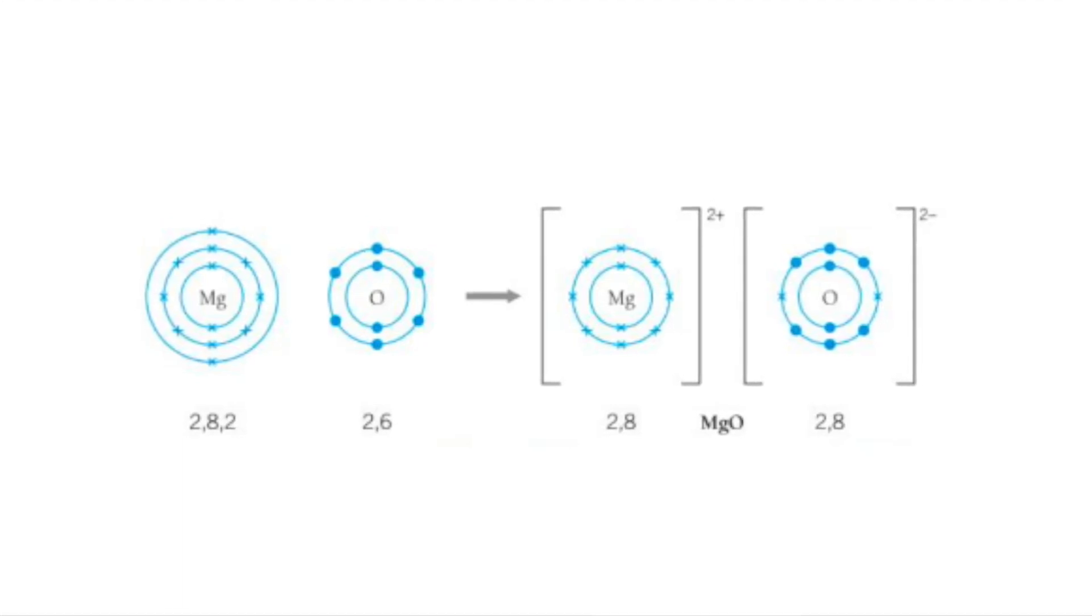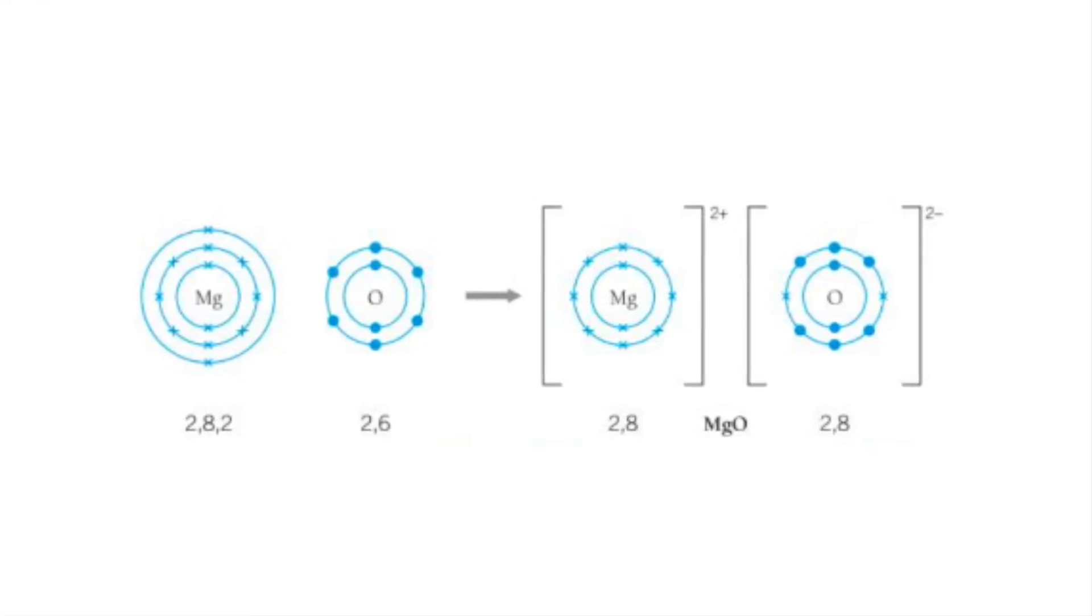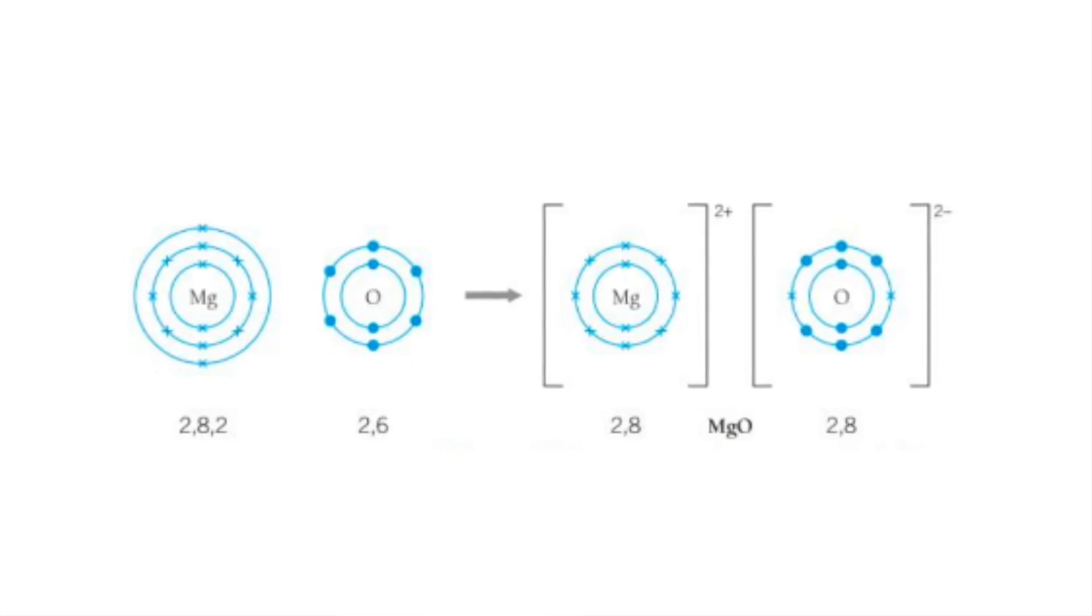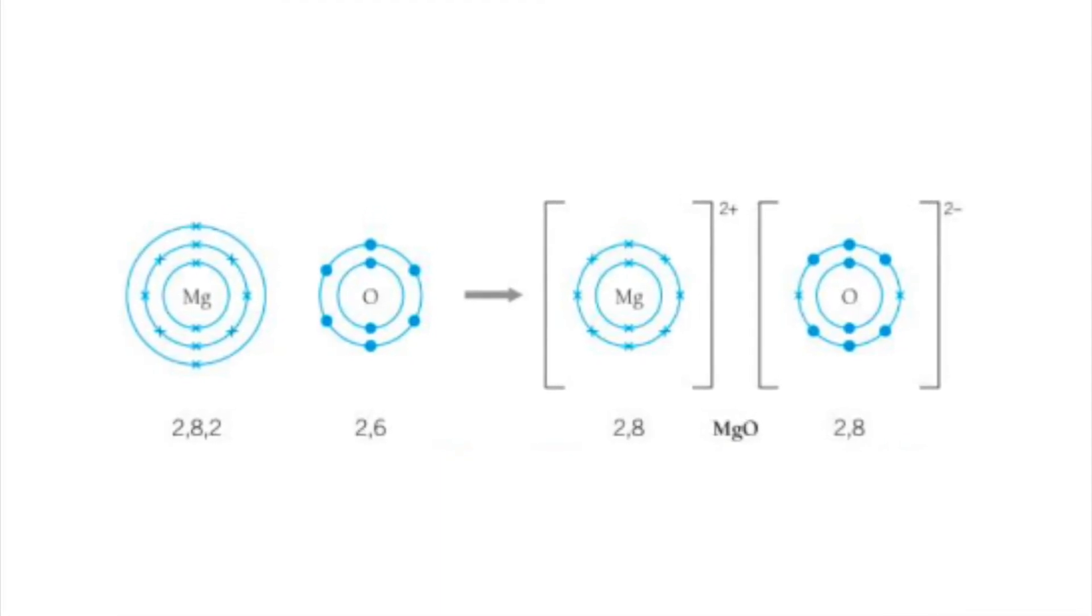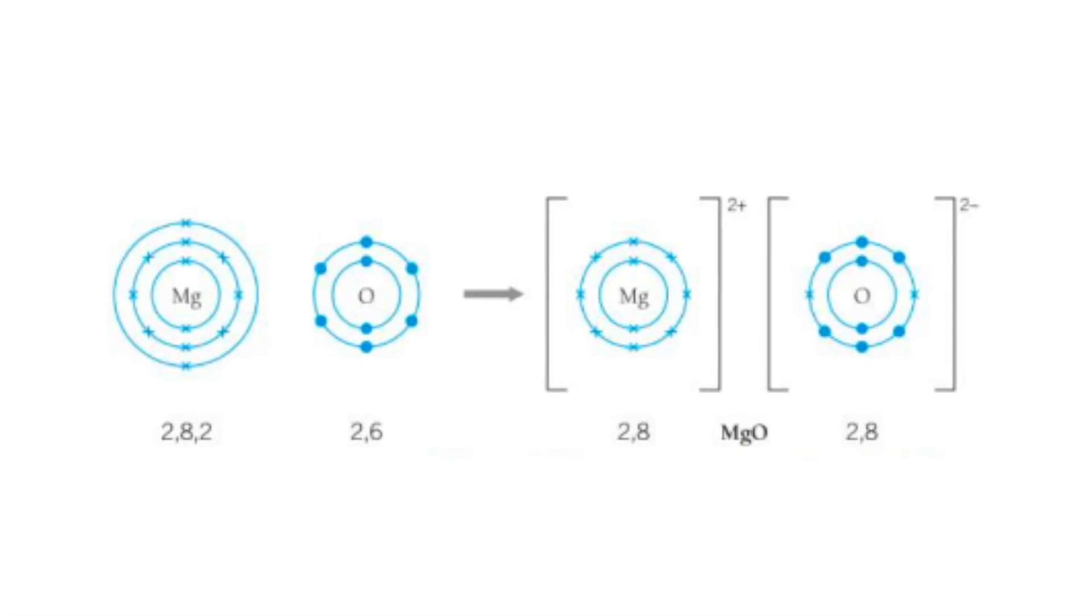Now this is an example of a dot and cross diagram and in your exam you may be asked to draw one of these. So on the magnesium ions the crosses are represented and the dots are represented on the oxide ions.